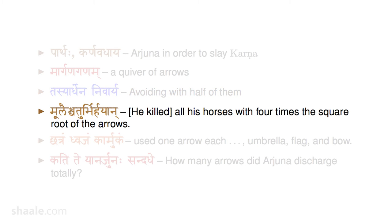Then, Moolaish chatur bhihi Hayanu — Haya means horse. Now he brings in the square root: four times the square root of x arrows were used to finish the horses of the other person.